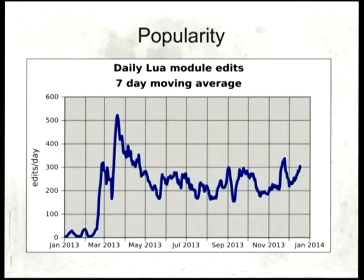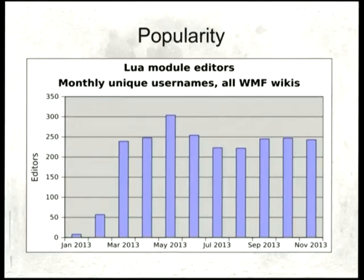Popularity: this is the number of edits per day to modules right across Wikimedia websites — we get about 200 to 300 edits a day. I don't know if this can be directly compared to open source project commit rates, but I think it shows we've created a moderately sized open source project written in Lua. This graph also shows the number of unique editors editing Lua per month across all wikis — we have about 250 users contributing to Lua scripts.